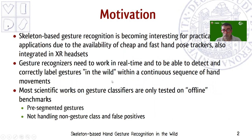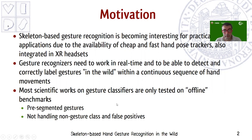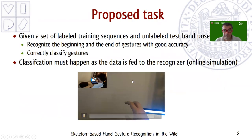Skeleton-based gesture recognition is becoming quite interesting for practical applications due to the availability of cheap and fast hand pose trackers, often integrated also in mixed reality headsets. However, most research works proposing new methods for classifying gestures based on this kind of input are only tested on offline benchmarks, dealing only with pre-segmented gesture classification and not handling the distinction between non-gesture and gesture classes, and not handling the issues related to false positives. For this reason, we propose to the participants of the contest the following task.